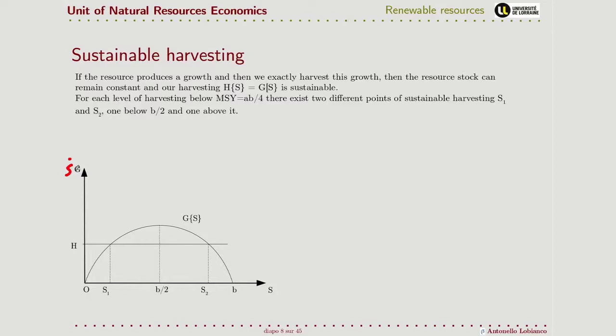But if there is harvesting, the variation of the stock will be in general different. And in particular, if we are in certain points and we harvest what is exactly equal to the growth produced by the resource compatible with that point of stock where we are, of course, the stock doesn't change. So we have a sustainable harvesting in the sense that the variation of the stock remains zero.